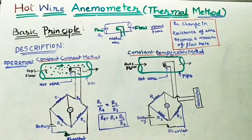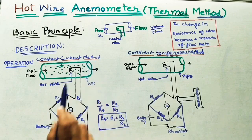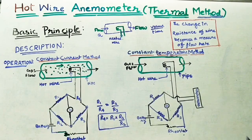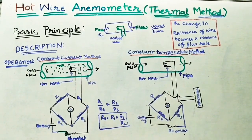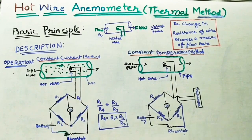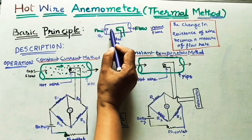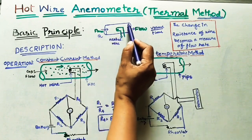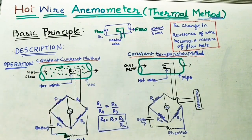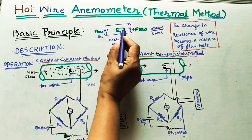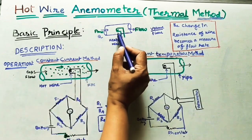So how will it find the discharge Q value? Here, what is the basic principle? We are using two methods: one is the constant current method and the next one is the constant temperature method. Both methods work on the same basic principle. I have drawn a diagram here. Flow is going in one direction at the input in a given pipe, and I am keeping one electric conductor — a heated wire — in the flow stream.